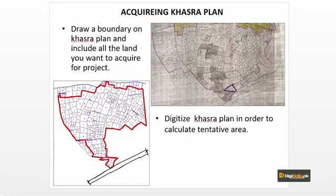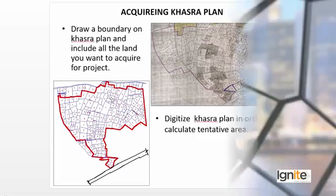When you tell someone your home location, you will need to give the Khasra number. During the Mughal era, mapping was being done — we also know the name of Todar Mal. This term is mainly used for property measurements so that property conflicts can be reduced.